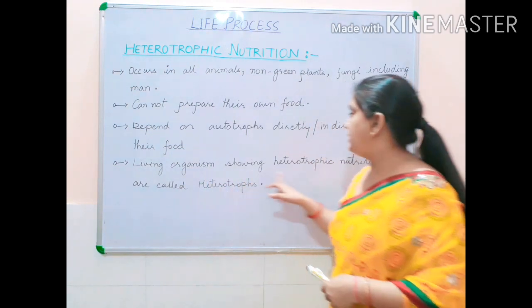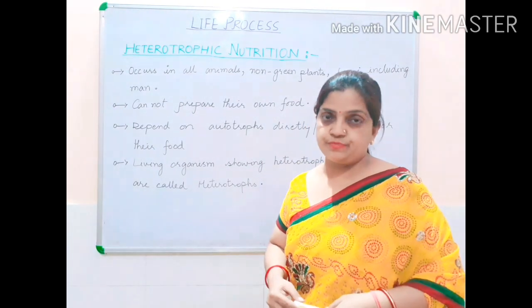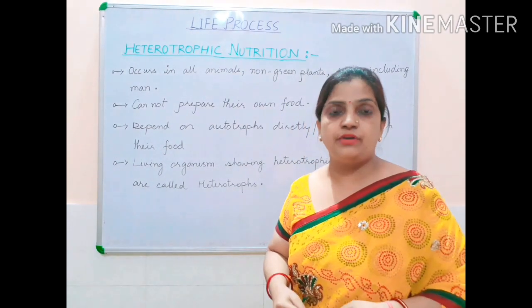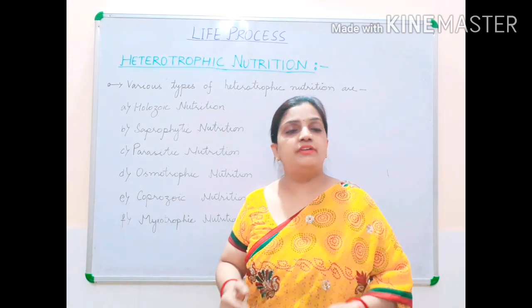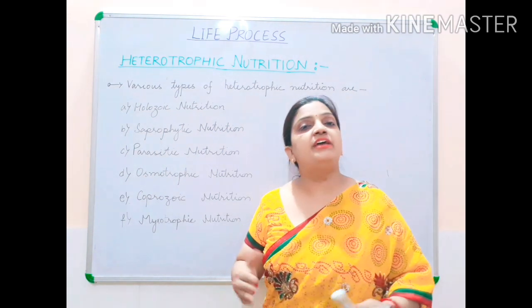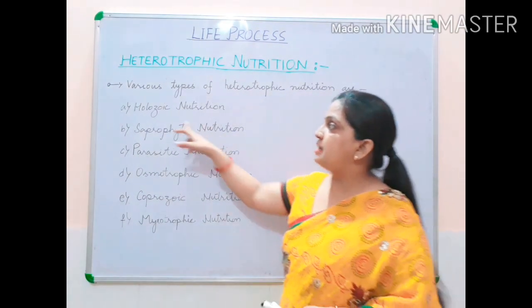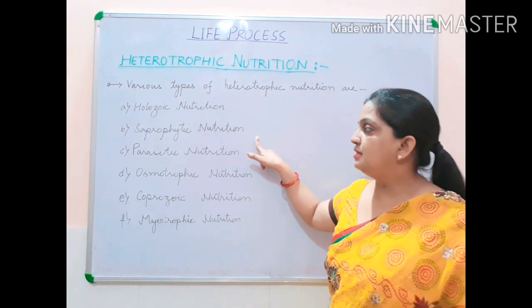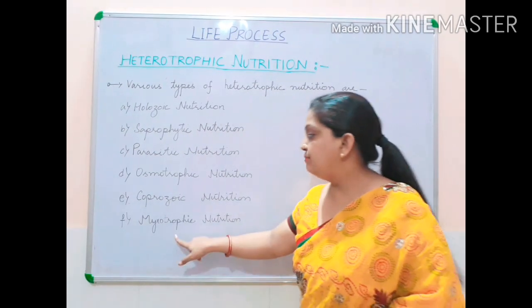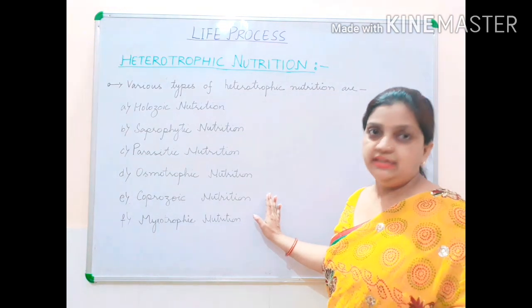This mode of nutrition is called heterotrophic nutrition, and living organisms showing it are called heterotrophs. Since there are different types of living organisms, there are various types of heterotrophic nutrition: holozoic nutrition, saprophytic nutrition, parasitic nutrition, osmotrophic nutrition, coprozoic nutrition, and mixotrophic nutrition. These are the main types we are going to discuss in this session.